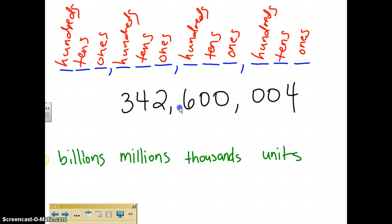So I would just read this number right here exactly as it is. It's 342. Then there's a comma, so I've got to read the last name for that family. So it's 342 billion, 600 million, 004. Now, the last family, you didn't hear me say the word units. We don't have to read the family of the last name because there is no comma after that family. You only read the last names when you reach a comma. So again, that number would be 342 billion, 600 million, 004.